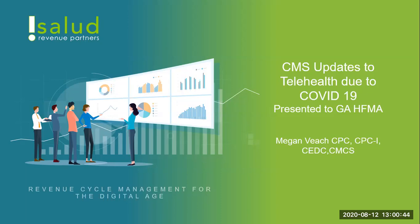If you go online to the Georgia HFMA website, you'll see that CPAR — Certified Patient Account Representative Course Materials — those materials and testing are available for purchase. They're available until November 30th, and testing concludes December 31st. So when you have time, please be sure to check that out.